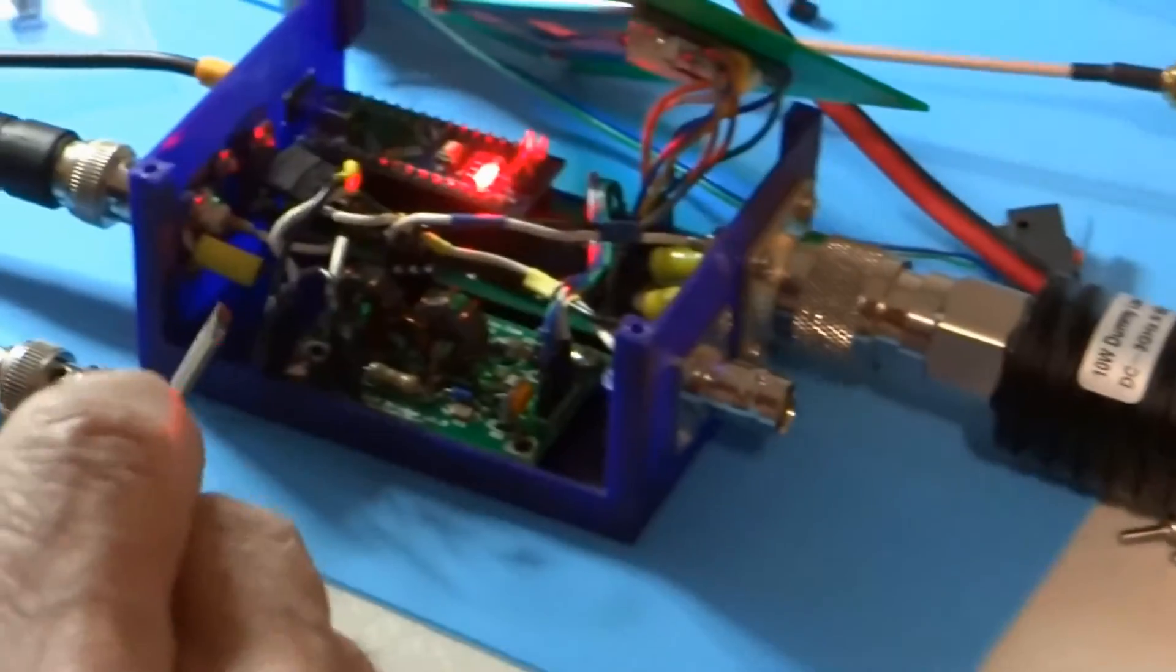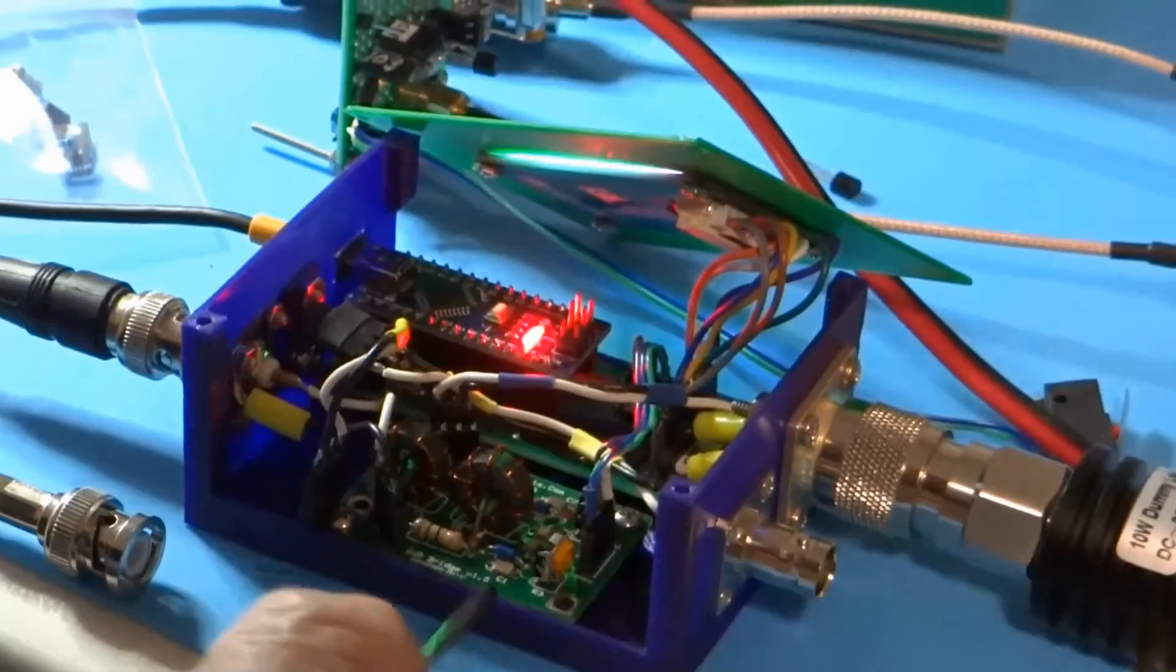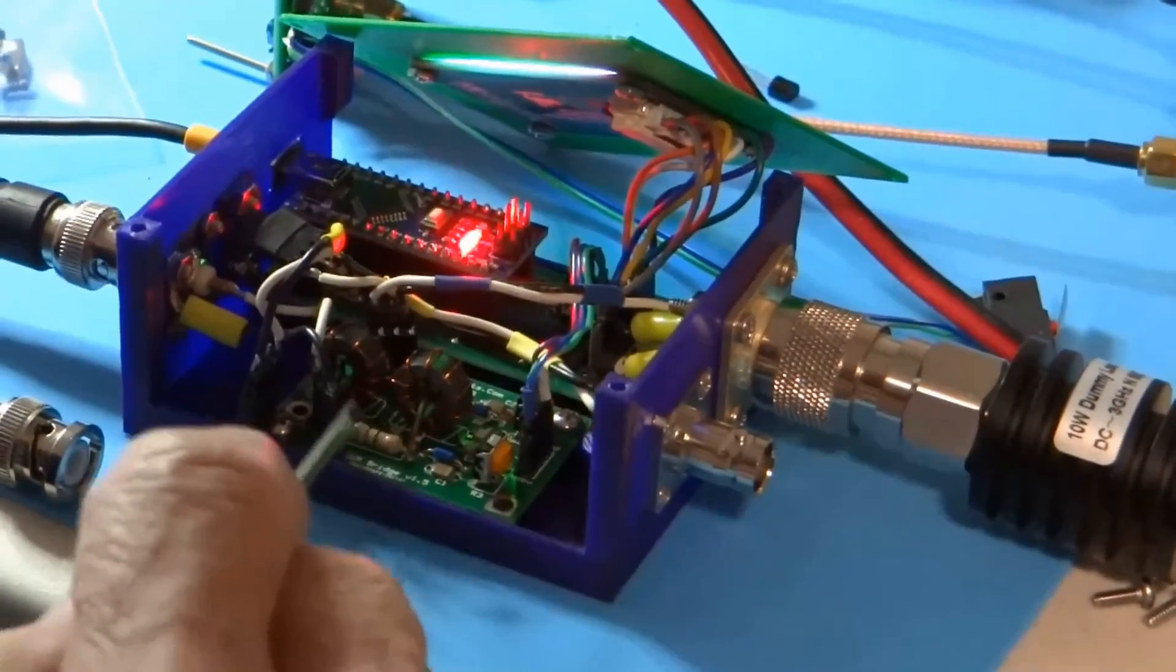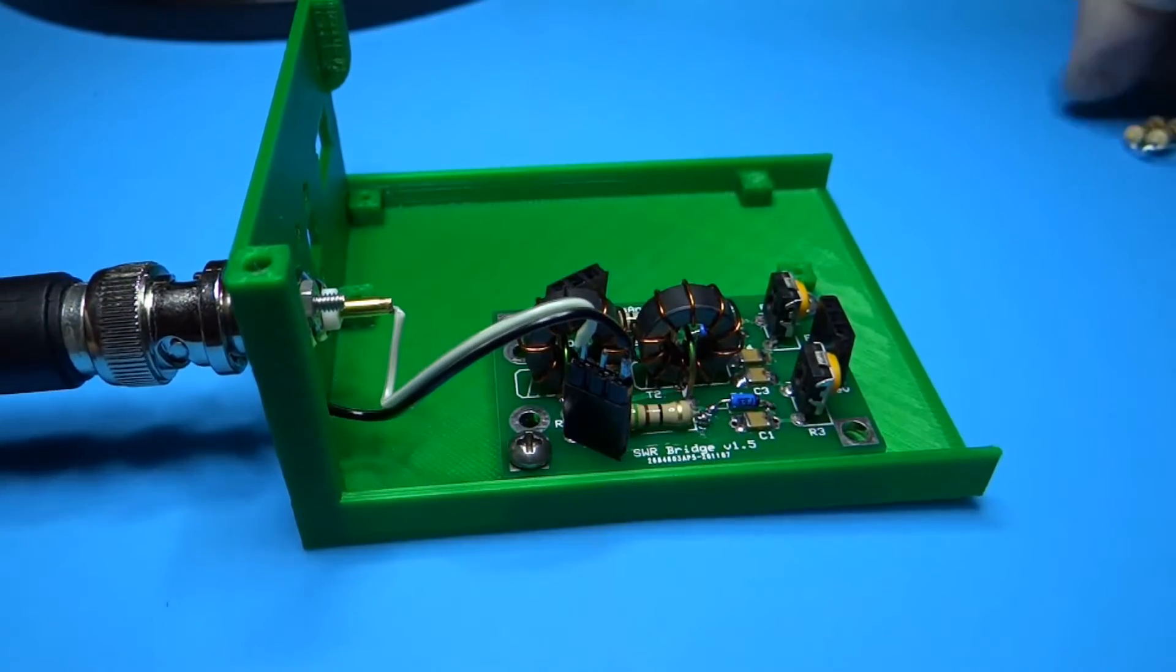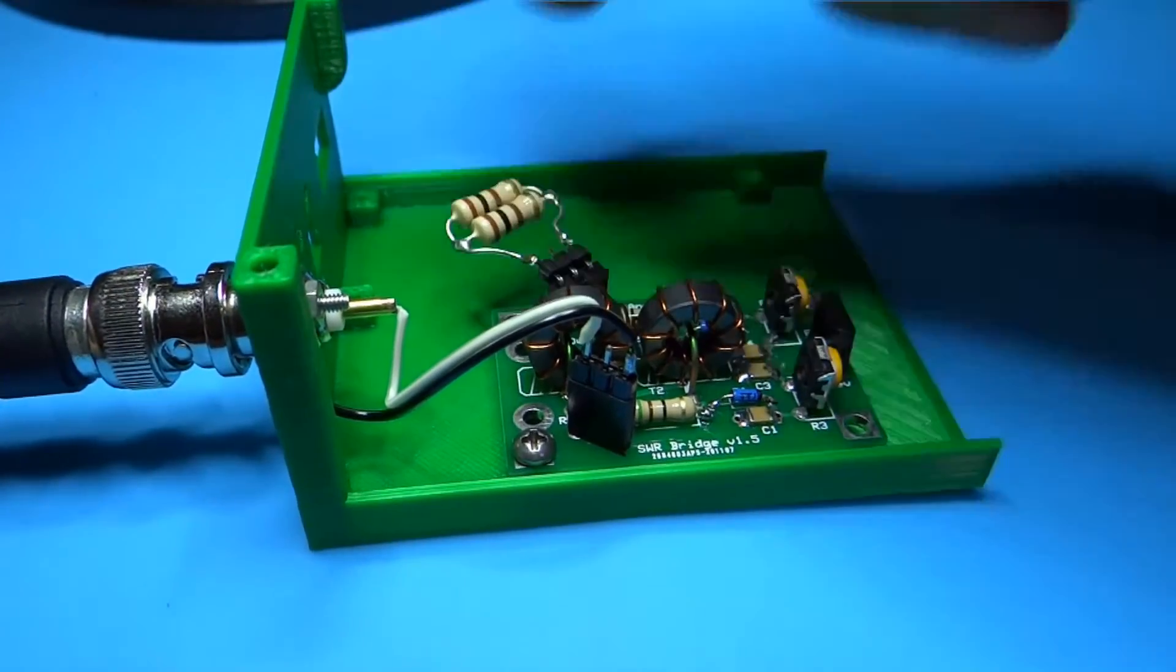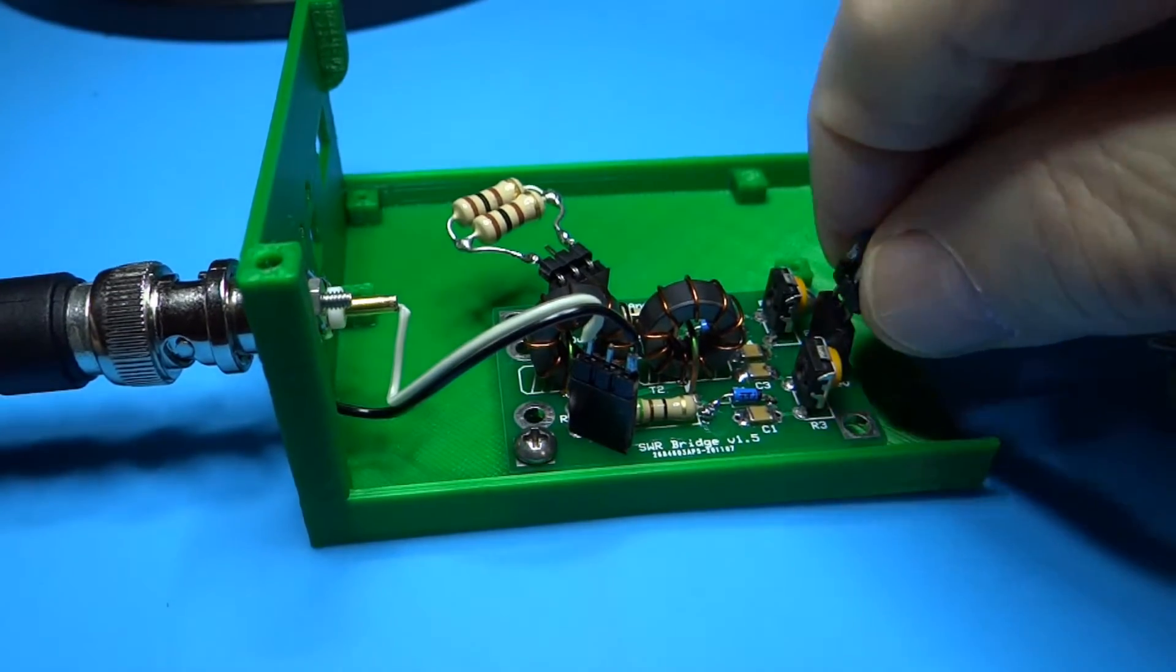Calibrating the bridge is straightforward. Notice the symmetry of the bridge. Input and output arms consist of identical components connected in the same way. The kitsandparts.com build instructions explain how to produce equal readings for the same power and load, whether connected in the forward or reverse direction.